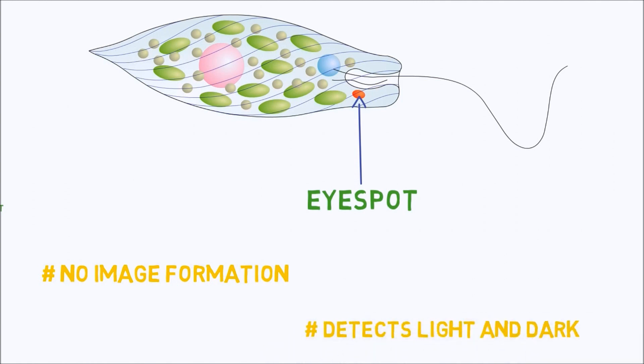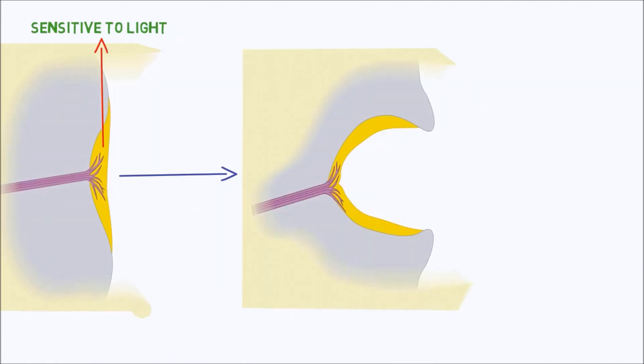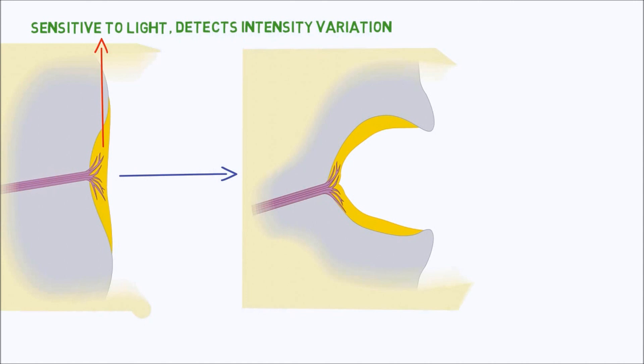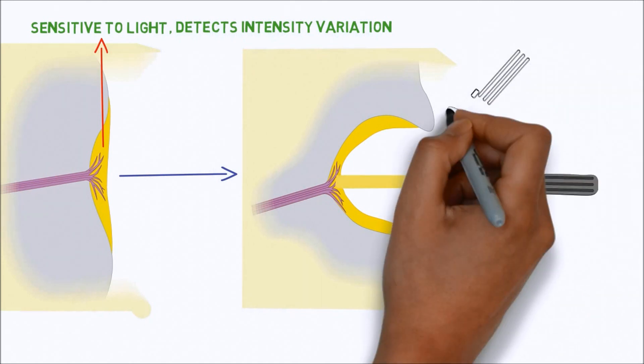Next, imagine that you have a flat sheet of cells, each of which is sensitive to light. Now what will happen if you gradually curve that flat sheet of cells? An eye with more photoreceptors can detect variations in light intensity across its surface.